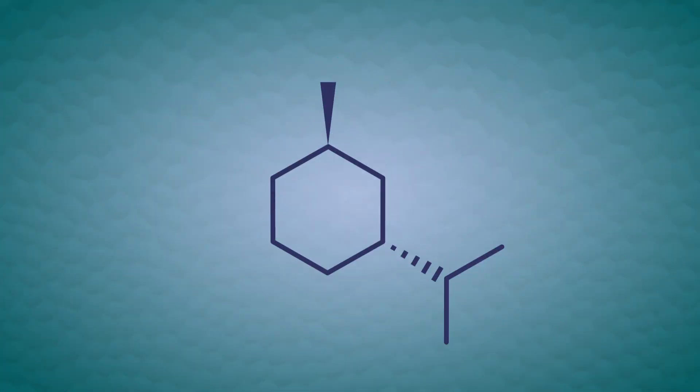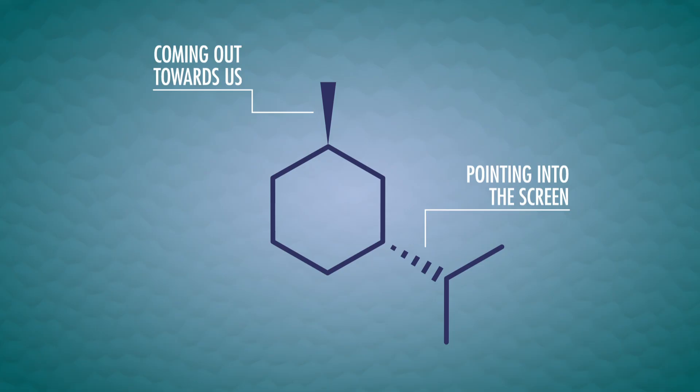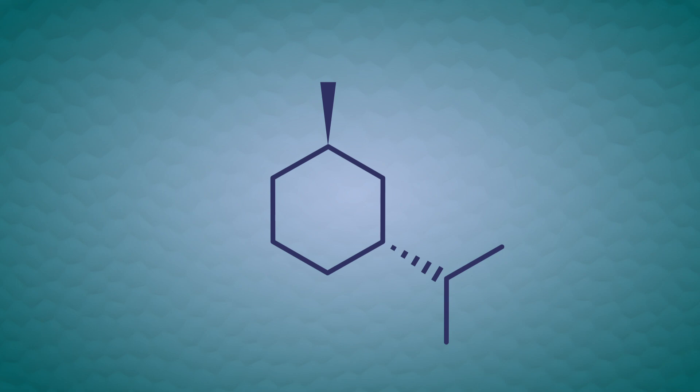Remember skeletal structures of cyclohexane? They look like flat hexagons. So we also have to think about how to convert a flat structure to a chair drawing, especially when there are two or more substituents. The first step is to see what the flat structure tells you. In this molecule, for instance, we know the solid wedge means the methyl group is coming out towards us, and the dashed wedge means the isopropyl group is pointing into the screen. So we have to make sure these groups stay on the correct side of the cyclohexane when we draw a chair. The methyl needs to be above the plane, and the isopropyl needs to be below the plane.